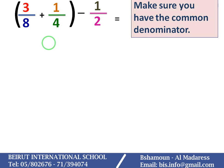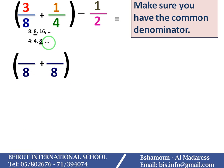The common denominator of 8 and 4 — to find it, we list the multiples of 8, which are 8, 16, and so on, and the multiples of 4, which are 4, 8, and so on. The common multiple is 8, so the common denominator will be 8. As you see here, in the 3 over 8, I already have the denominator 8, so I keep it as it is.